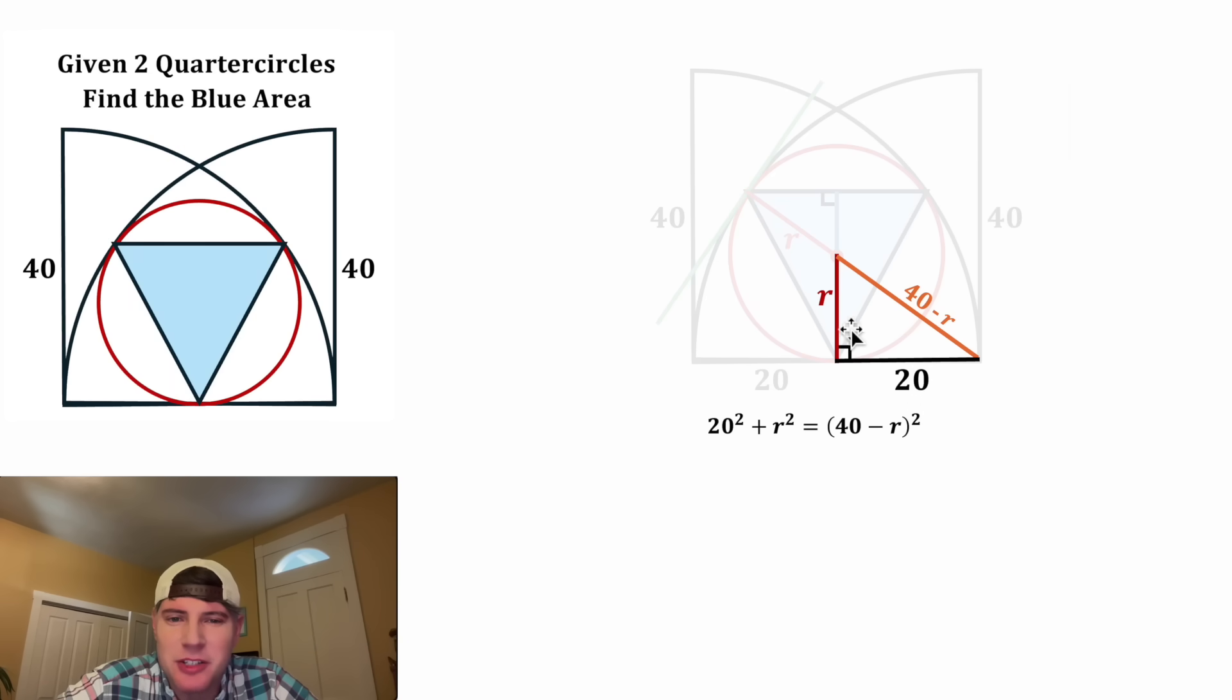It'll be 20 squared plus R squared equals the quantity 40 minus R squared. On the left-hand side, 20 squared is equal to 400 and we can copy down the R squared. And then on the right-hand side, the quantity 40 minus R squared is equal to 1600 minus 80 R plus R squared.